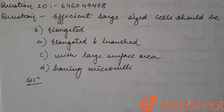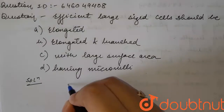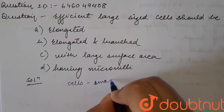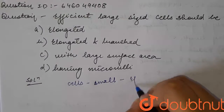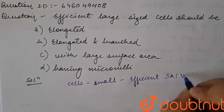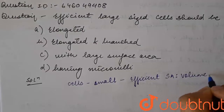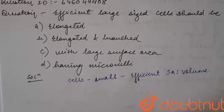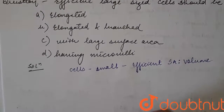Hello students. We have a question: a patient large size cells should be — a) elongated, b) elongated and branched, c) with large surface area, or d) having microvilli. Generally, cells are small so that they can have an efficient surface area to volume ratio, and so they can diffuse faster.